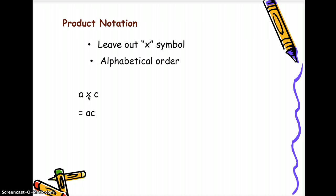When you don't see a symbol between variables, it means it's multiplication. Another example, b times 3a. So you need to remove the multiplication symbol and then you need to write the number first and then arrange your variables according to alphabetical order. So that will be 3ab.